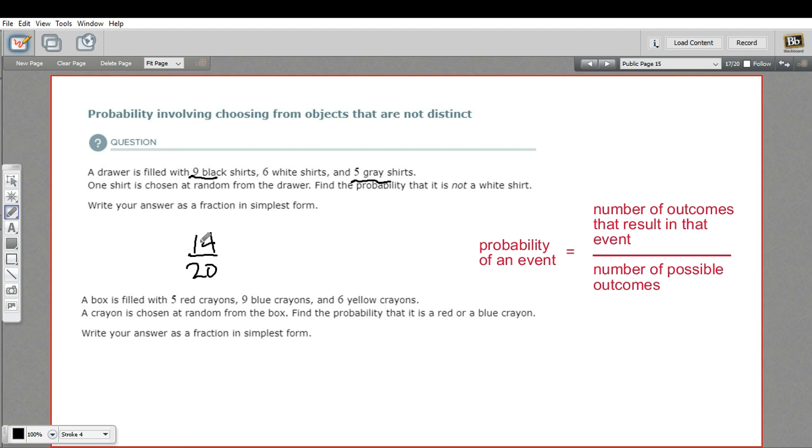So on top is the number of outcomes that result in what we're looking for, which is not white. And on the bottom is the total number of possible outcomes.